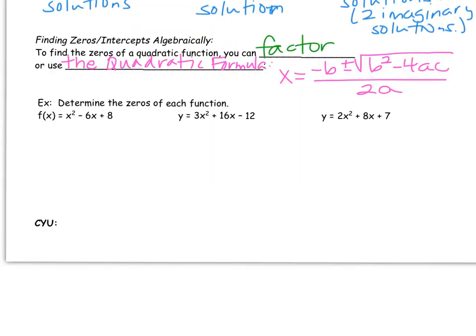When you're asked to solve or find zeros algebraically, our choices are factoring or the quadratic formula. So I wrote the quadratic formula over at the right. You might want to jot that down as a resource if you don't have it memorized. x equals negative b plus or minus the square root of b squared minus 4ac, all of the fraction in the top, divided by 2a on the bottom. And if you recall, a, b, and c are the coefficients in the quadratic function. So let's take a look at some examples down below.